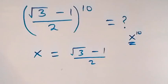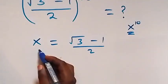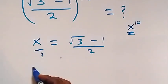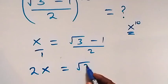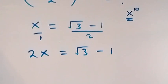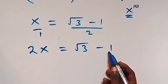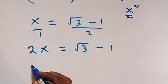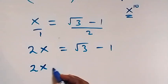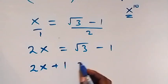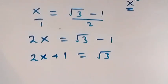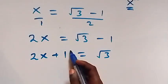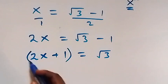From here we can cross multiply, and this becomes 2x equals to √3 minus 1. Taking the minus 1 to the other side it becomes plus, so we have 2x plus 1 equals to √3.